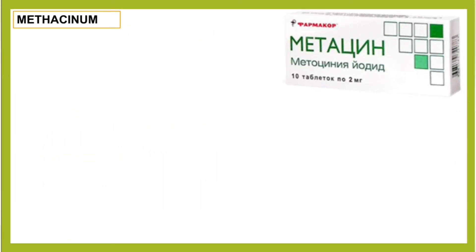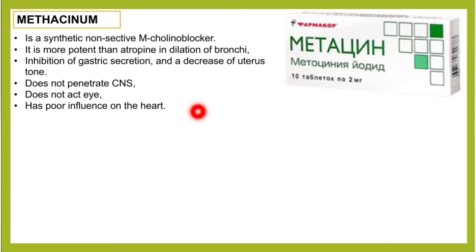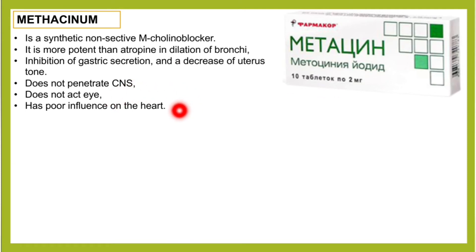The next drug is metacine, a synthetic non-selective m-cholinoblocker. It is more potent than atropine in dilation of the bronchi, has the ability to inhibit gastric secretion, decreases uterine tone, does not penetrate the central nervous system, does not act on the eye, and has poor influence on the heart.